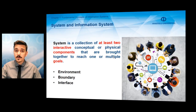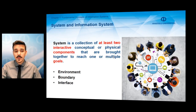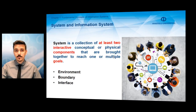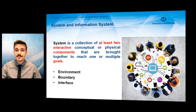These are environment, boundary, and interface. Everything that stays outside of a system is called environment. Boundary is the area that separates the system from its environment. And interface is the area that provides communication of system components with the environment.